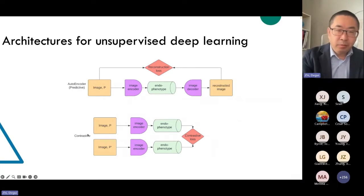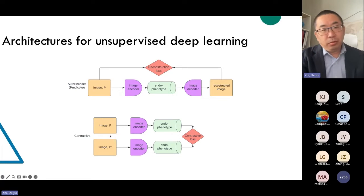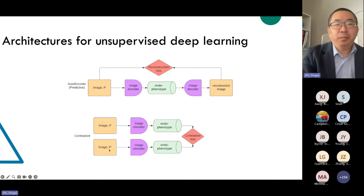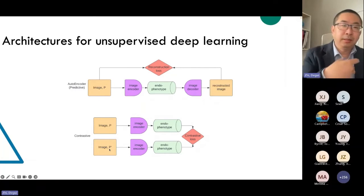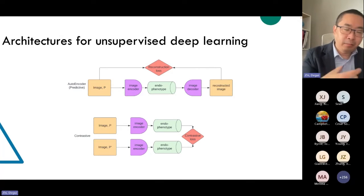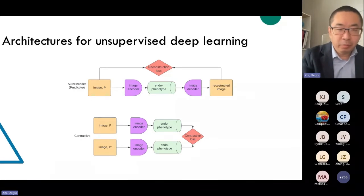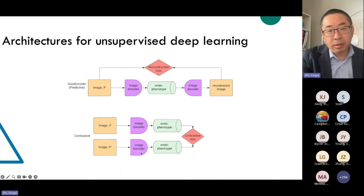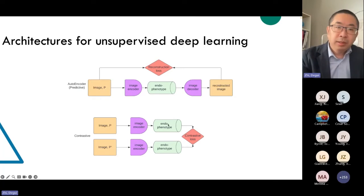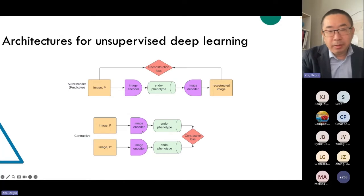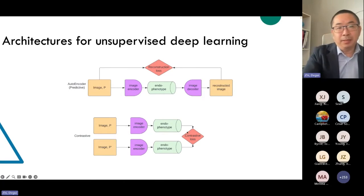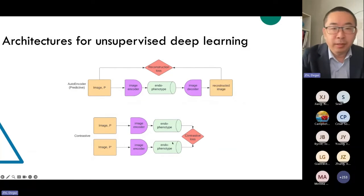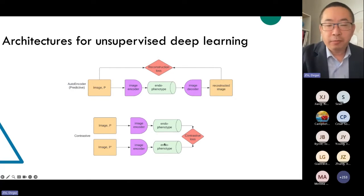We also do contrastive learning, another self-supervised approach. You have an image and a sort of repeat of that image — it can be left eye and right eye, brain MRI from one time point and another, or a perturbation of the input image. You have a parallel image encoder, and you want to make sure the two images going through the same encoder derive similar vectors — aligning the encodings of the two images. Both are very powerful approaches.